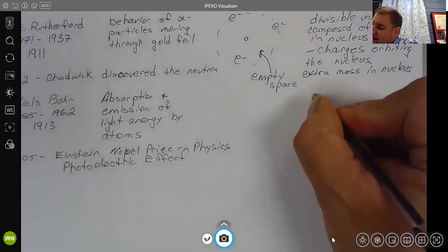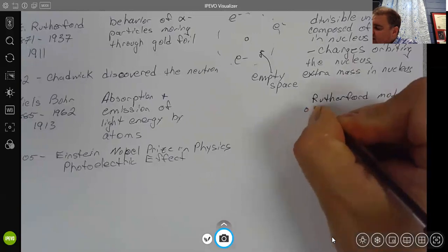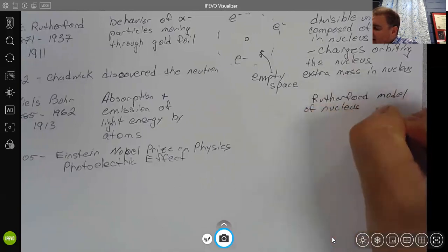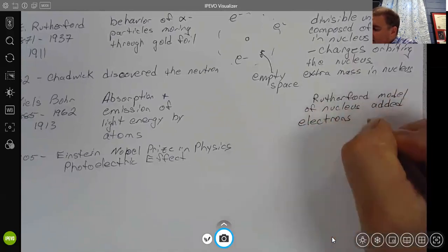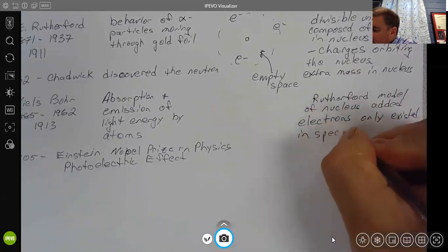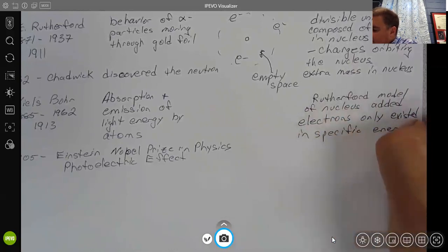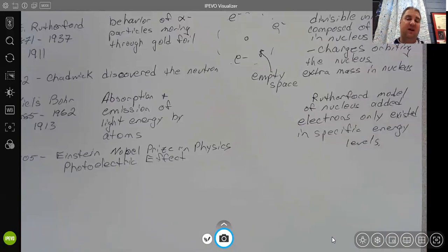And that the only way to explain that, so he basically took the Rutherford model of the nucleus and added in the idea that electrons only existed in specific energy levels. And that because those electrons only existed in specific energy levels, they could only pass between specific levels, which means they could only absorb or emit specific amounts of energy. And that that was where the fingerprints were coming from for all of this stuff.